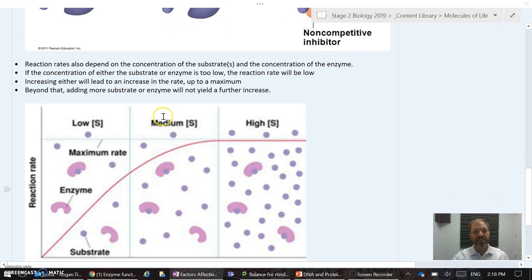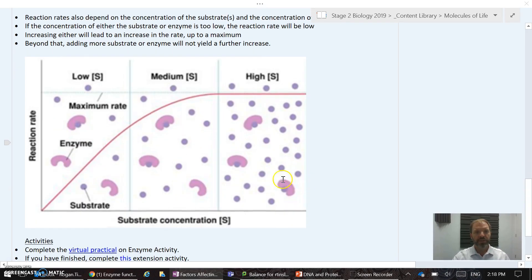The reaction rate depends on the concentration of the substrates. Clearly the other aspect is the concentration of the enzyme. The more enzyme you have, the faster it's going to work, but this graph shows the concentration of the substrate. If we look at this situation where there's plenty of enzyme around but not much substrate, the reaction rate's going to be fairly low.